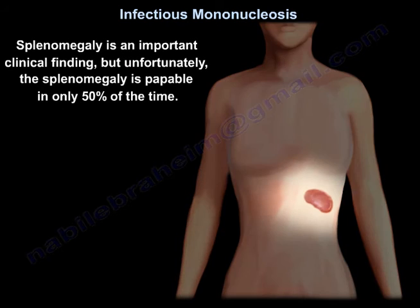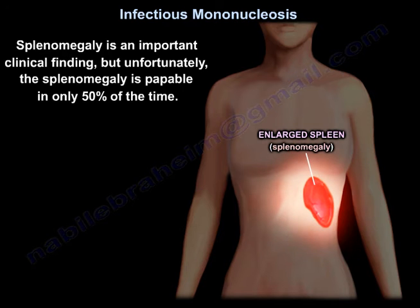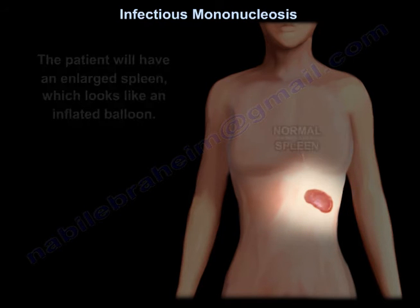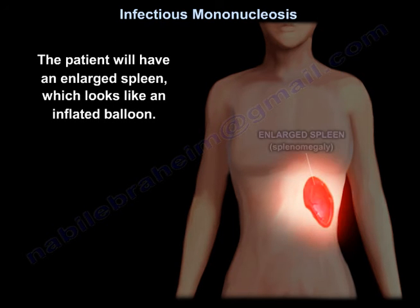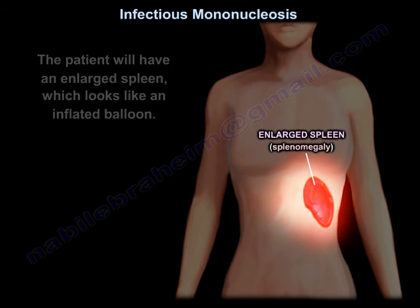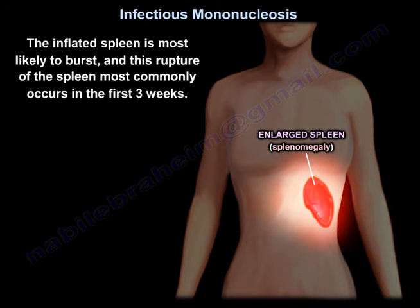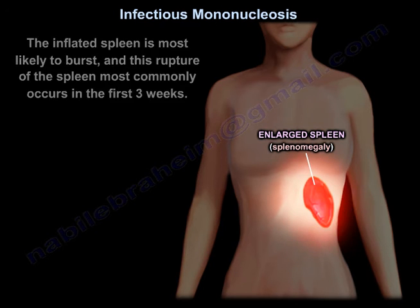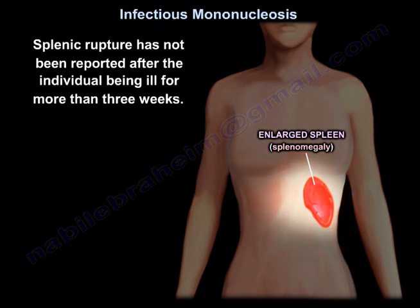Splenomegaly is an important clinical finding, though it is palpable only 50% of the time. The enlarged spleen looks like an inflated balloon and is most likely to burst. Splenic rupture most commonly occurs in the first three weeks and has not been reported after the individual has been ill for more than three weeks.